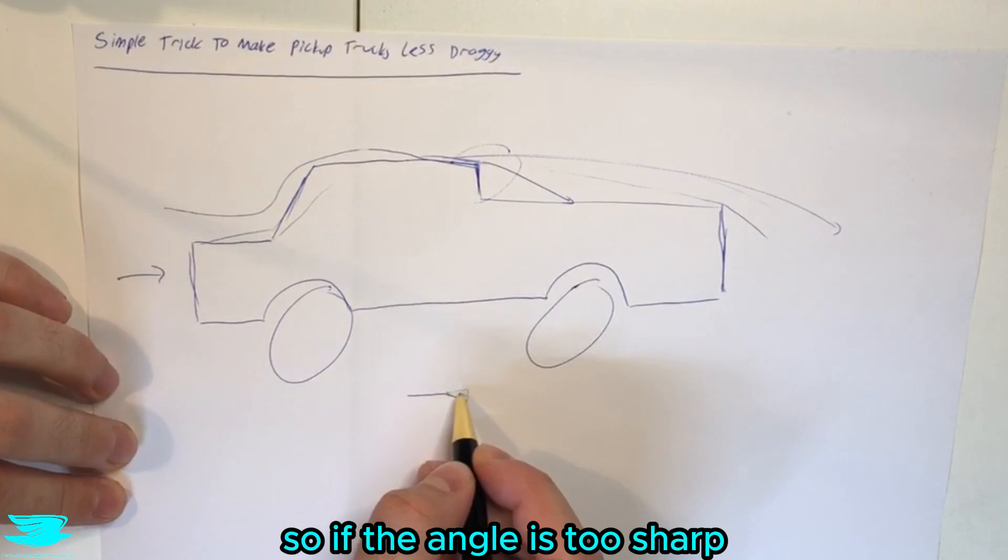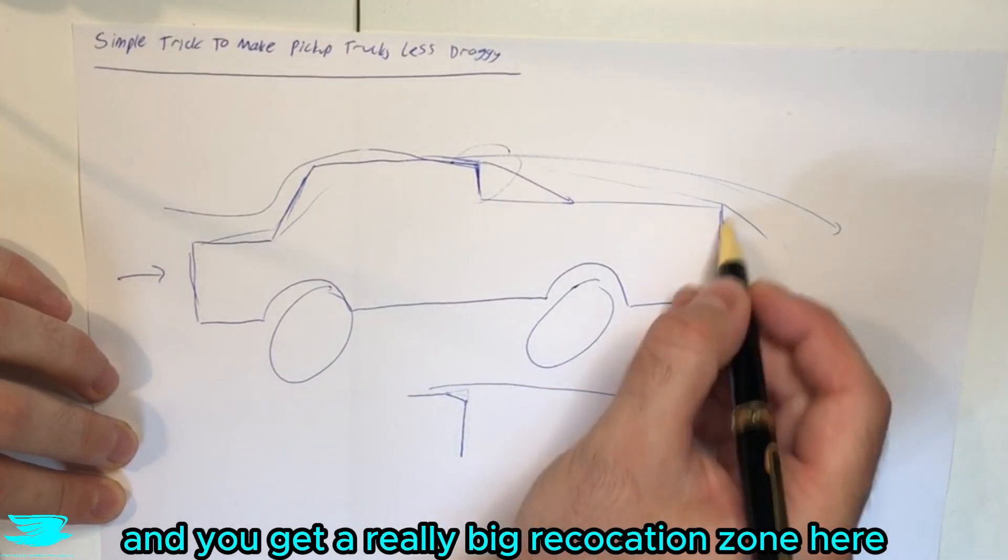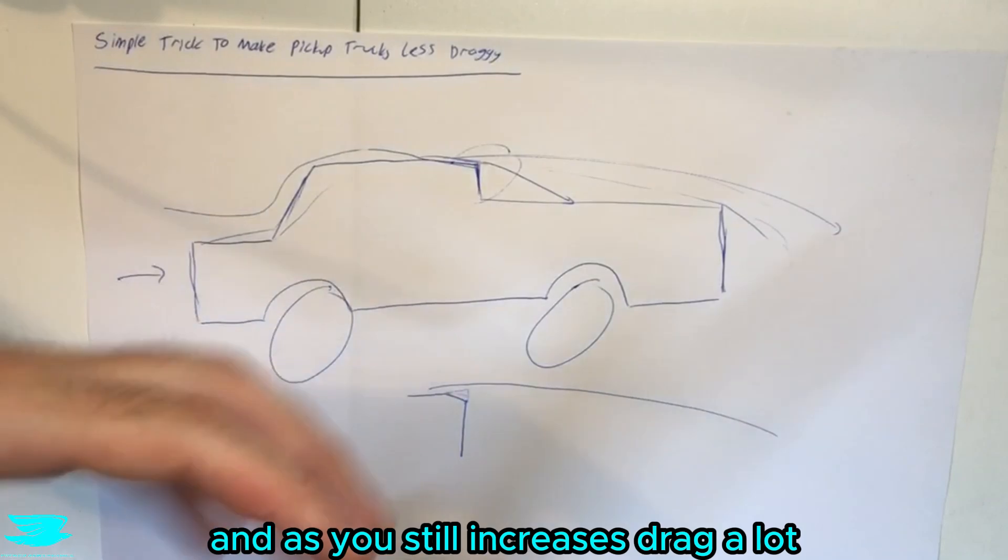If the angle is too sharp the flow will overshoot the bed and you get a really big recirculation zone here and that actually still increases drag a lot.